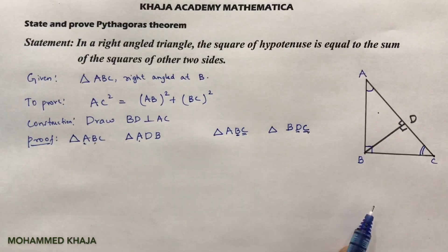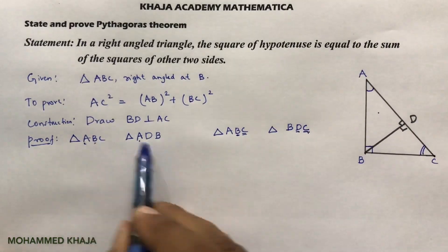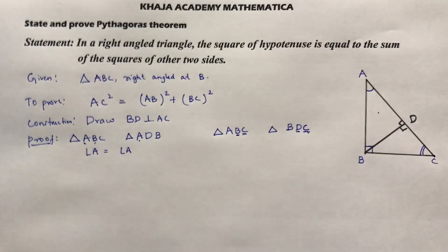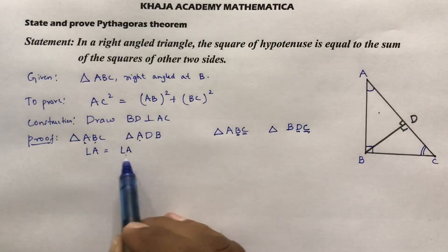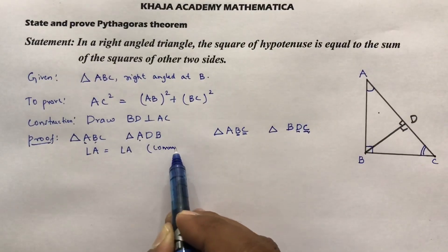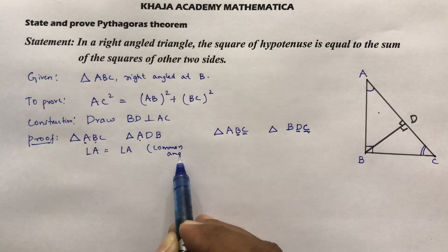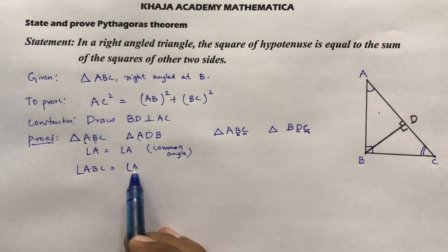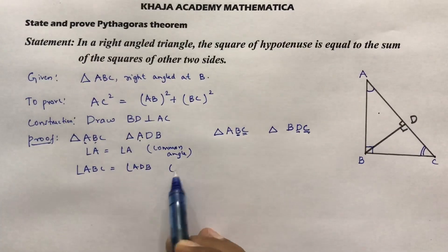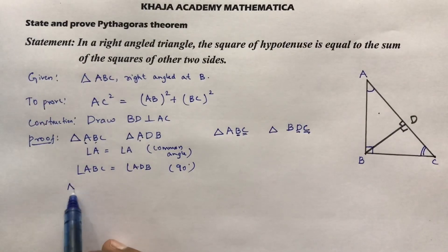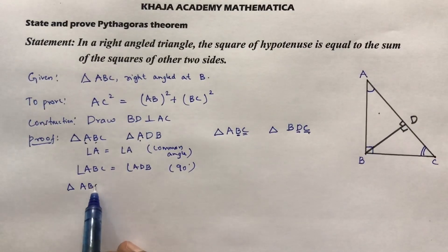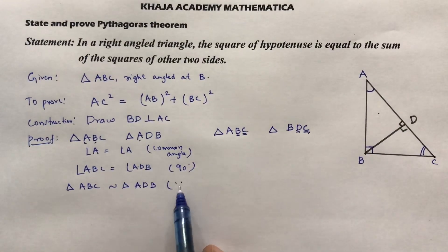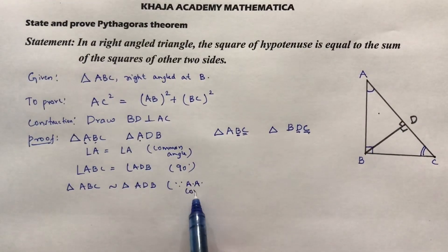Now I will prove these two triangles similar. If you write the order correctly, proving is very simple. Angle A equals angle A, which is the common angle in both triangles. Next, angle ABC equals angle ADB, both equal to 90°. So triangle ABC is similar to triangle ADB by the angle-angle corollary.